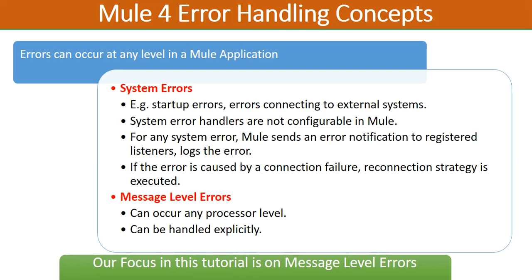If the error is caused by a connection failure to an external system, and you have configured a reconnection strategy, that strategy will be executed — for example retrying the connection a specified number of times. If it still does not connect after all retries, Mule will send an error notification to the listener and log the error. You will see the error in the logs but will have no way to configure or handle it yourself.